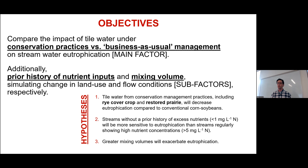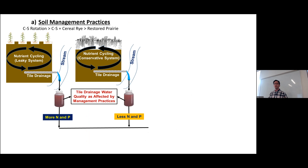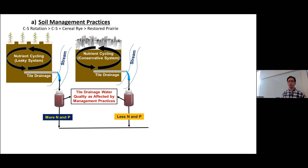Our major question was: does the prior stream condition matter? Imagine a pristine stream versus one that has been under a nutrient load for a longer time — would management changes in that watershed affect streams differently that come from a different legacy of nutrients? In soils, this is sometimes called soil memory or the legacy effect — the conditions that have built up in that stream over time.